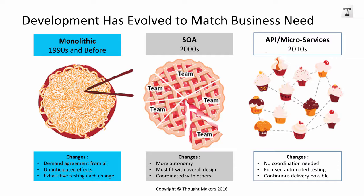A lot of companies wrapped their systems, but essentially they weren't implementing a service-oriented architecture on the back end. It did provide more autonomy to individual groups and business units, but just like in the monolithic approach, you still had to fit in with the overall design and architecture of the application, which means you had to coordinate with others — which can be slow and laborious.